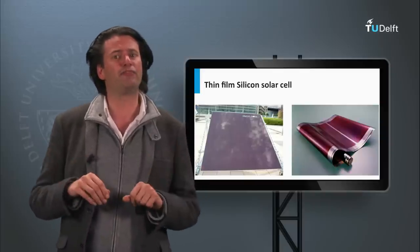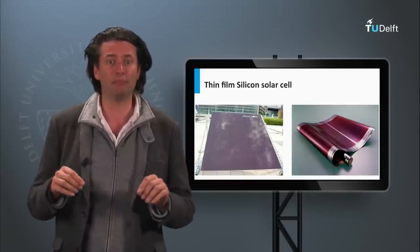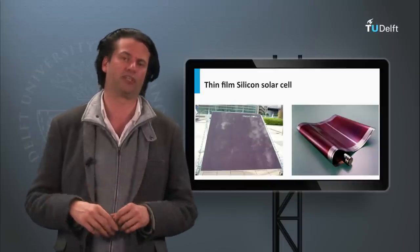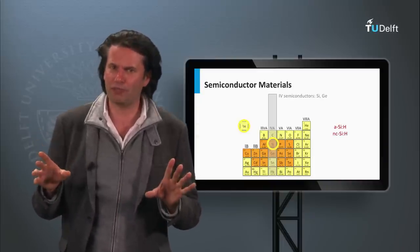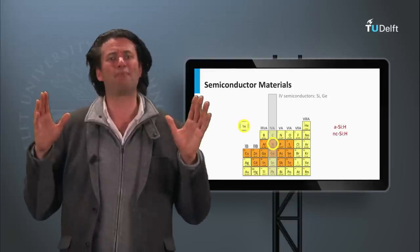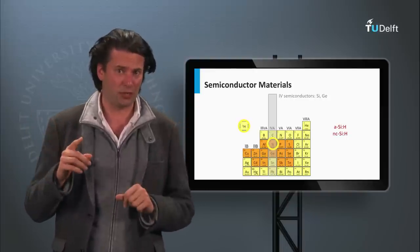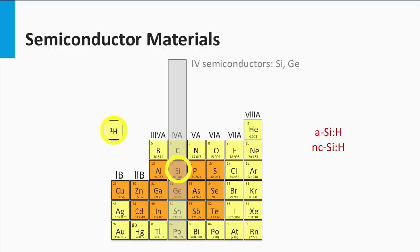An advantage of thin film silicon solar cells is that they can be deposited on glass substrates and flexible substrates. The first question we have to answer is which type of silicon alloys are being used as an absorber layer. The typical lattice structure is either amorphous or nanocrystalline. Nanocrystalline is also called microcrystalline in the literature.